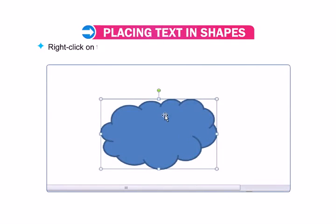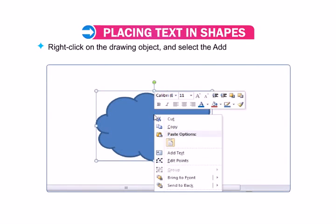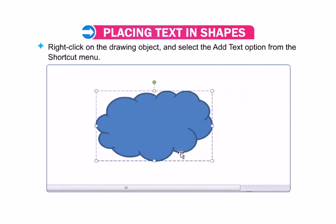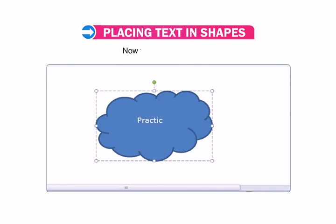Right-click on the drawing object and select the Add Text option from the shortcut menu. The insertion point appears in the object. Now you can type the text.